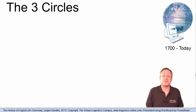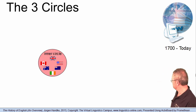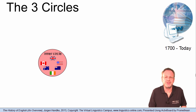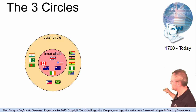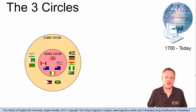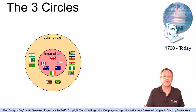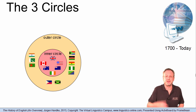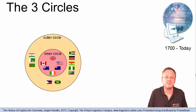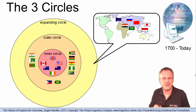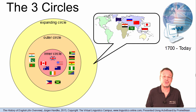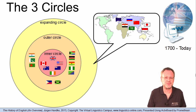Today, the spread of English around the world is often defined in terms of three concentric circles. The inner circle refers to traditional historical and sociolinguistic origins of English where it is used as a first or native language. The outer circle includes countries colonized by Britain and the United States where English is spoken as a second language and where it plays an important historical and governmental role in multilingual settings. The countries in the expanding circle did not institutionalize English as an official language but recognized the importance of English as a foreign language.